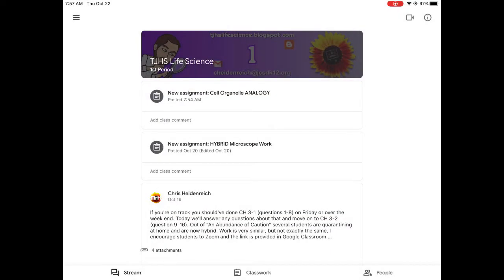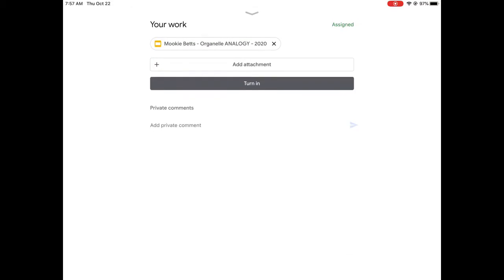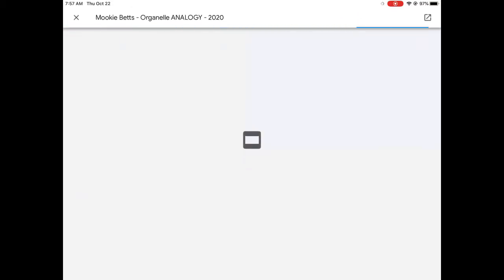All right, so we have a new assignment, the cell analogy. It's a Flipgrid assignment, but it's up at the top because it's new. And so the cell analogy, we're going to take the parts of a cell and compare them to the parts of something else. So down there, the red PDF is my example, but if you hit the up arrow, you can find your slides where you're going to work.